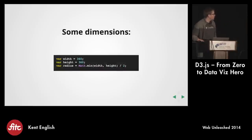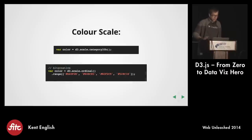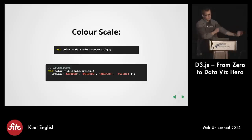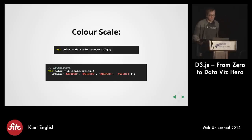First thing we're going to do is define a few dimensions with height, and the radius we're just going to set to the smaller of those two divided by two so that it fills the smallest dimension. D3 has a bunch of color scales that are built in — category10, category20A, 20B, 20C. It basically defines an array of 10 or 20 colors. When you're doing something like a pie chart, it will use those colors up, and if it gets to the end, it will start over at the beginning. You can also define your own colors.